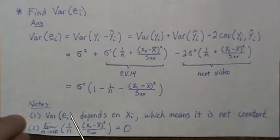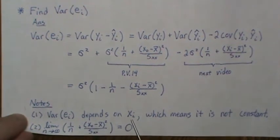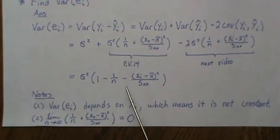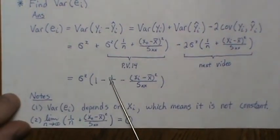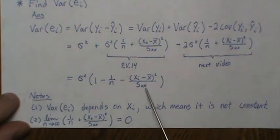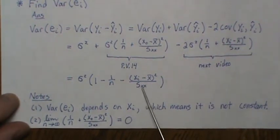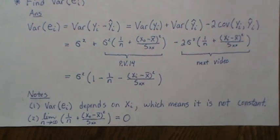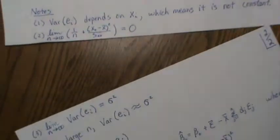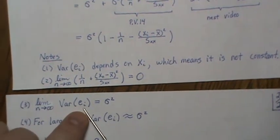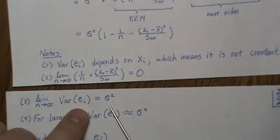However, as n goes to infinity — meaning we gather more and more data — xᵢ is a fixed point and on average goes to zero, while Sxx goes to infinity. So these two terms go to zero as n goes to infinity, meaning in the limit the variance of our residuals approaches σ².